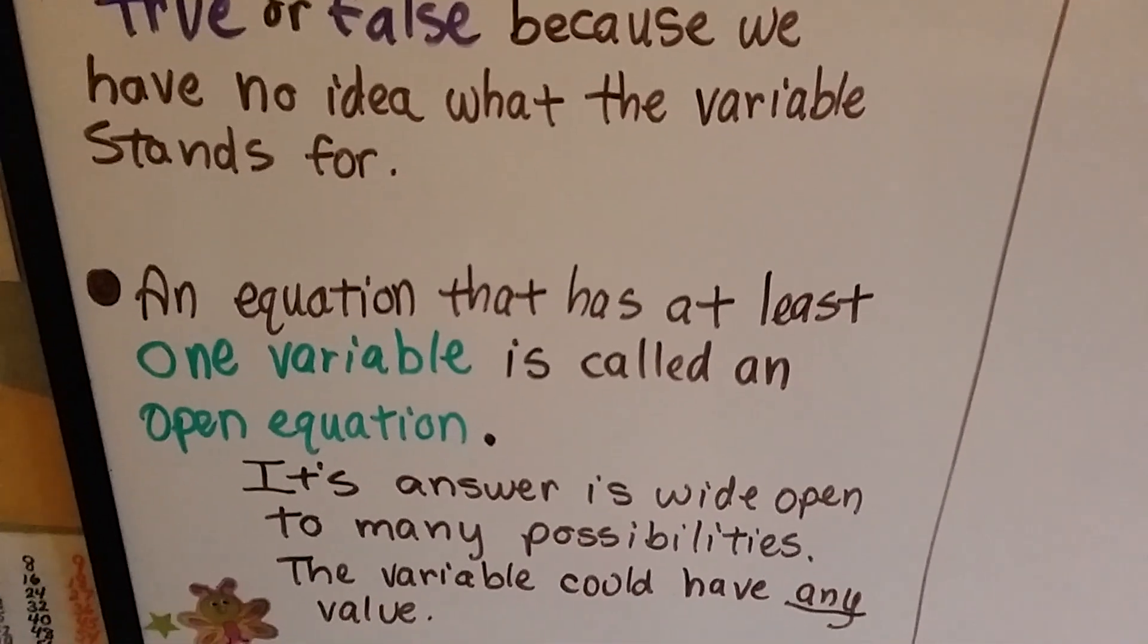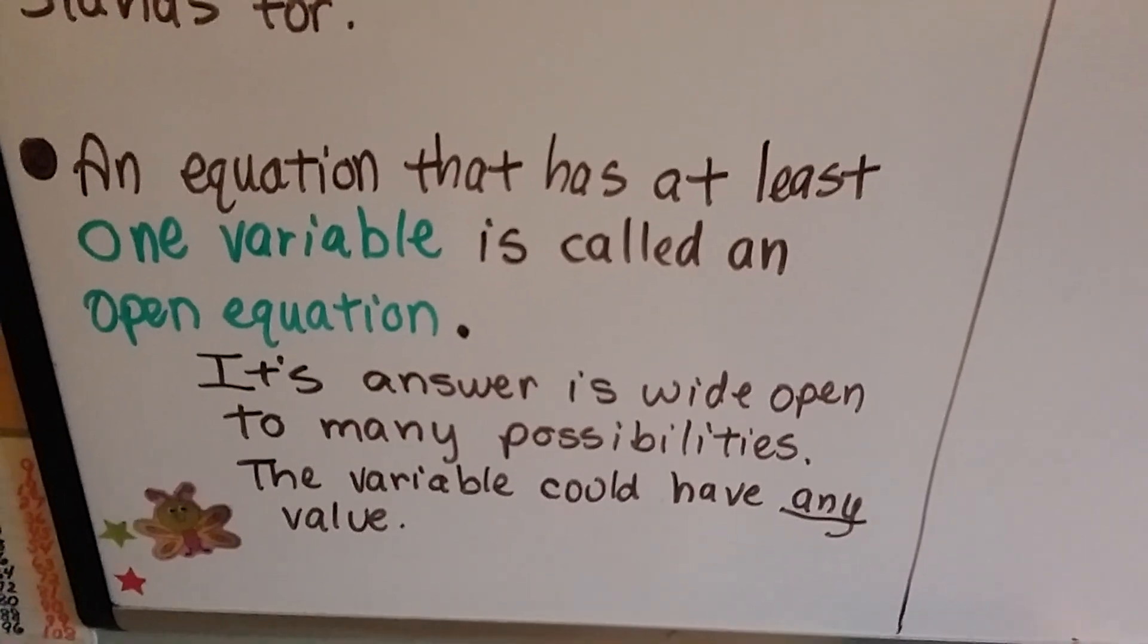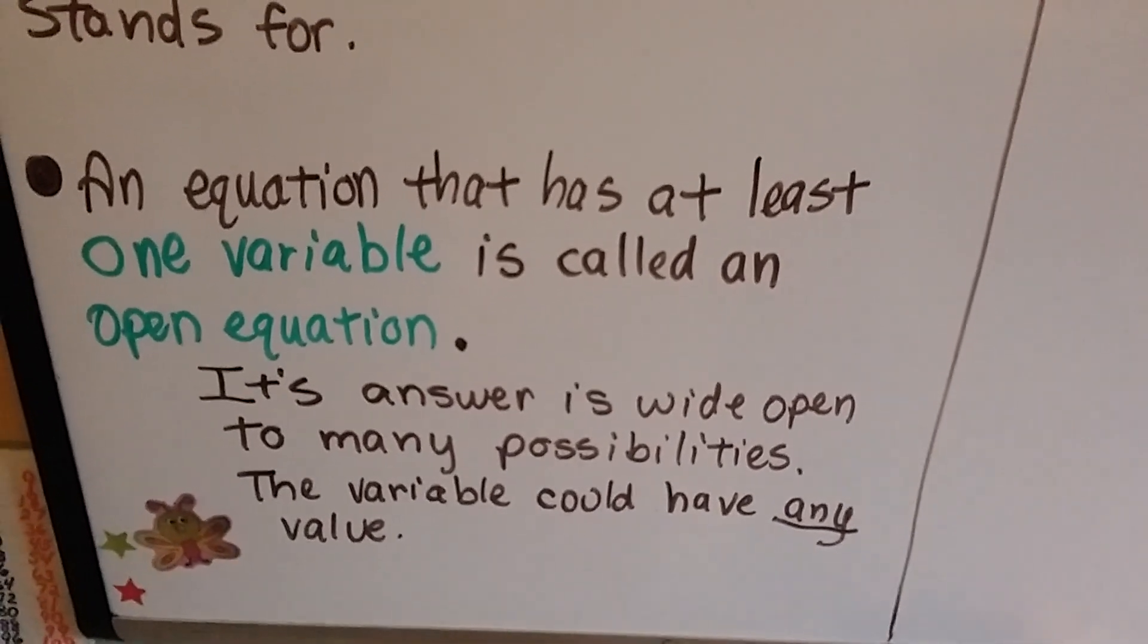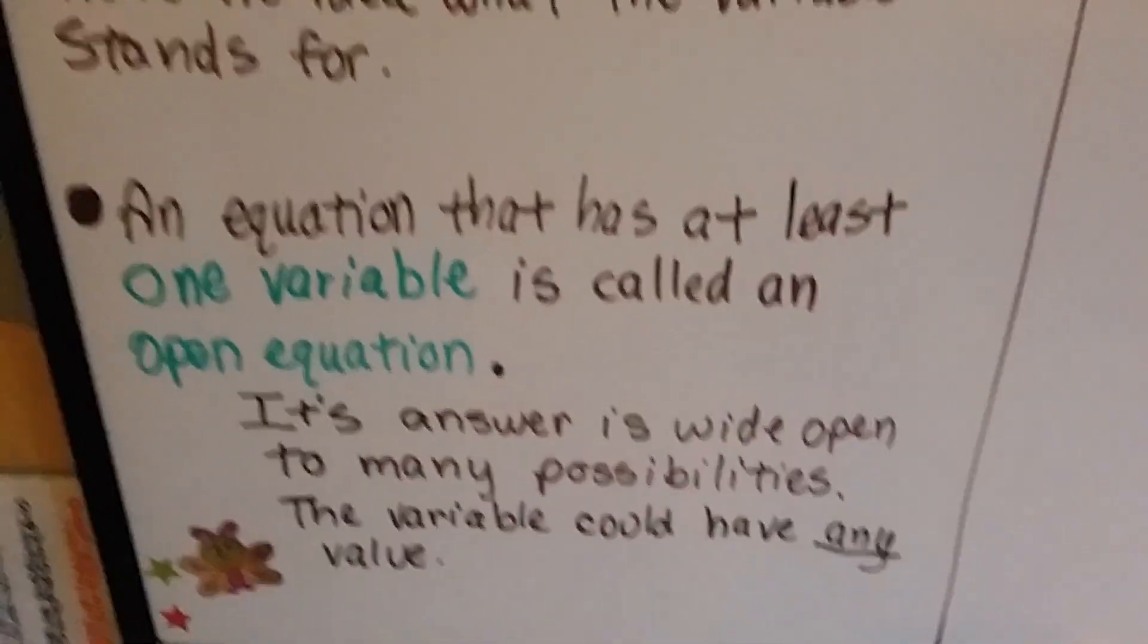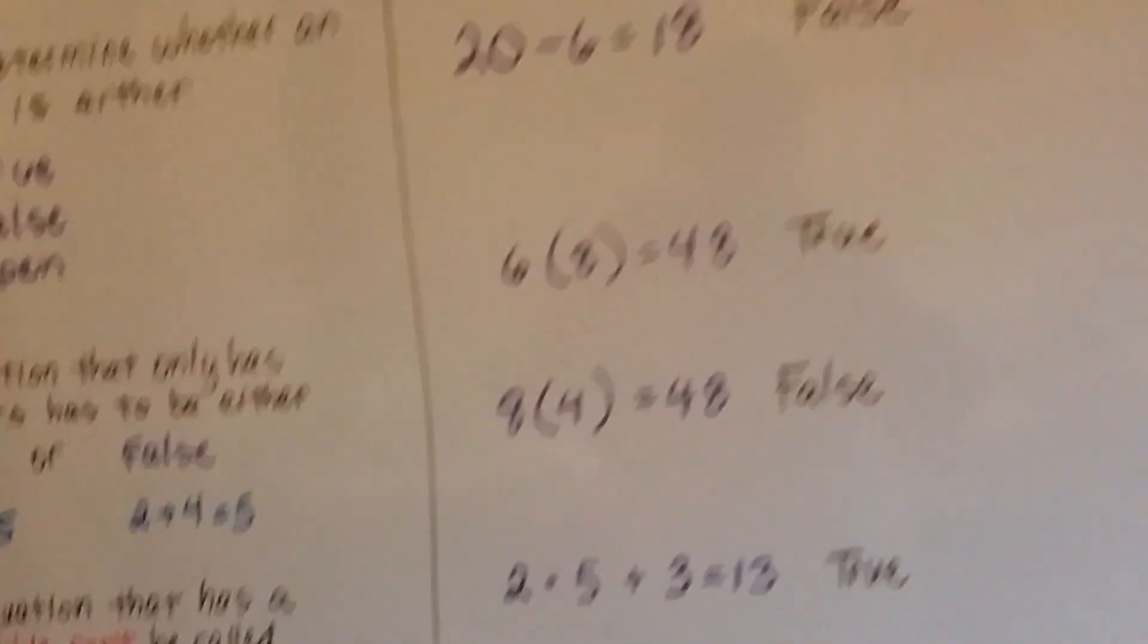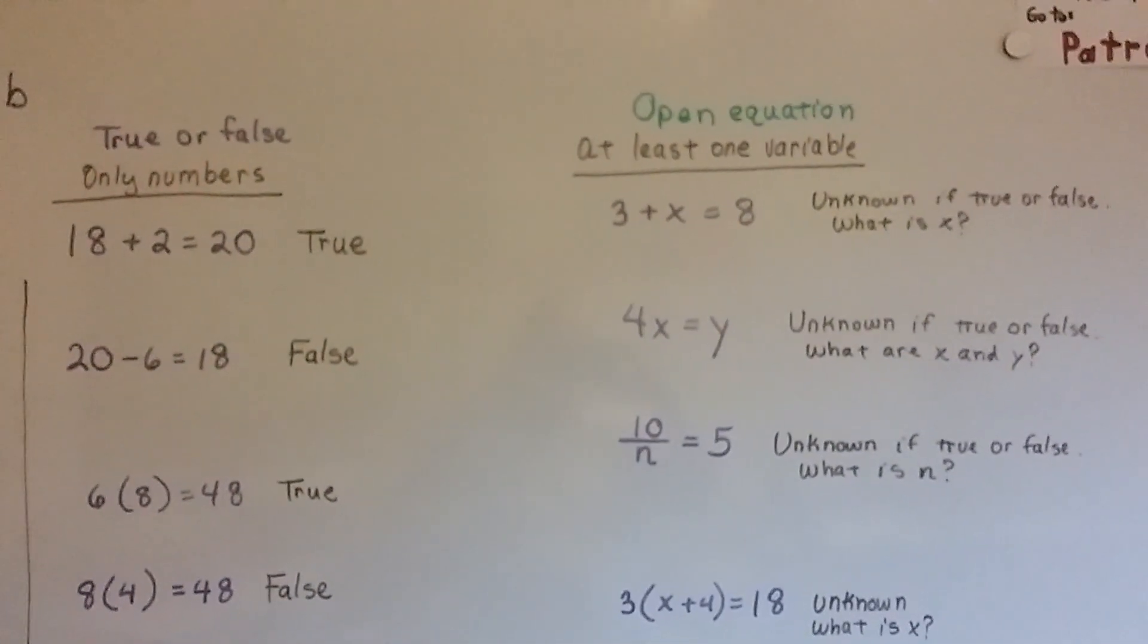And an equation that has at least one variable is called an open equation. Its answer is wide open to many possibilities, and the variable could have any value. So let's take a look at these. We've got some true, false, only number equations, and some open equations that have at least one variable.